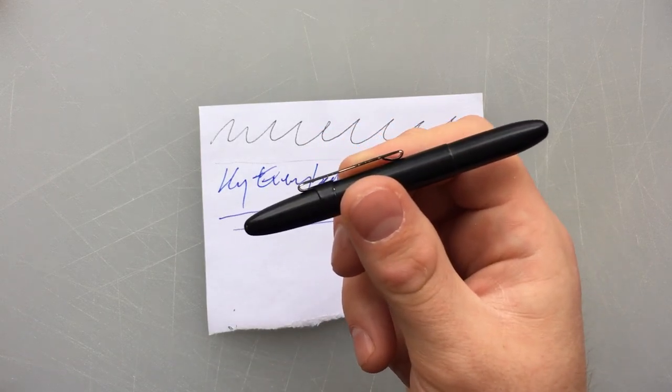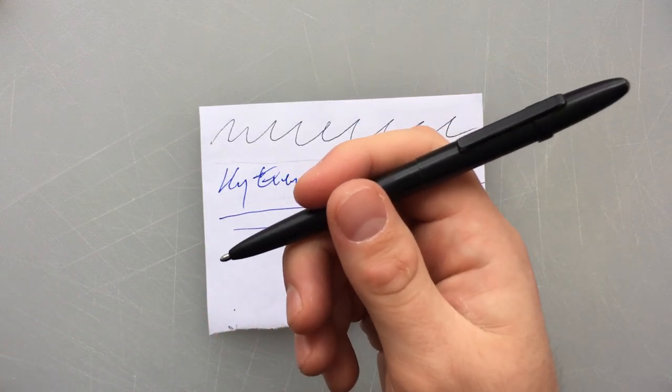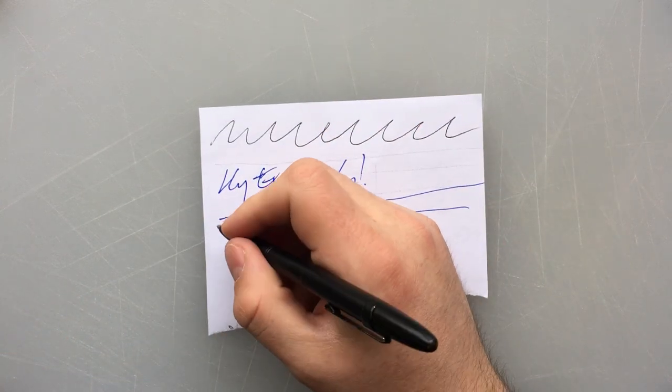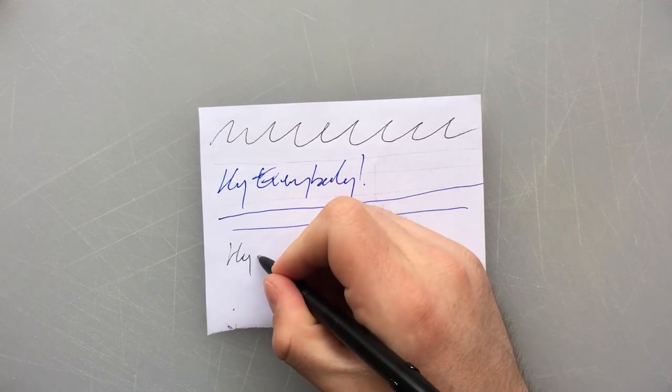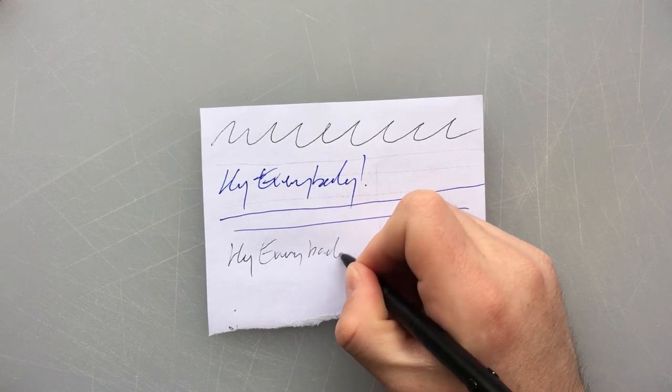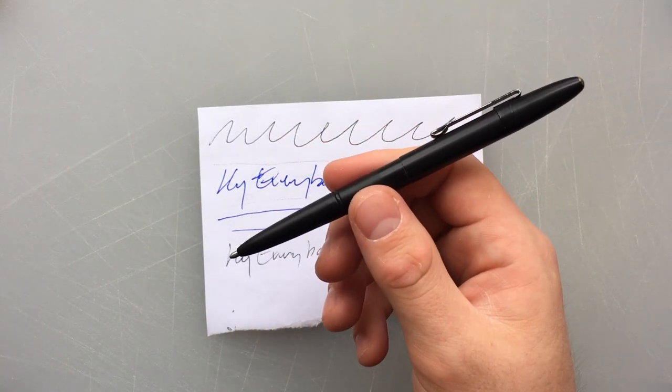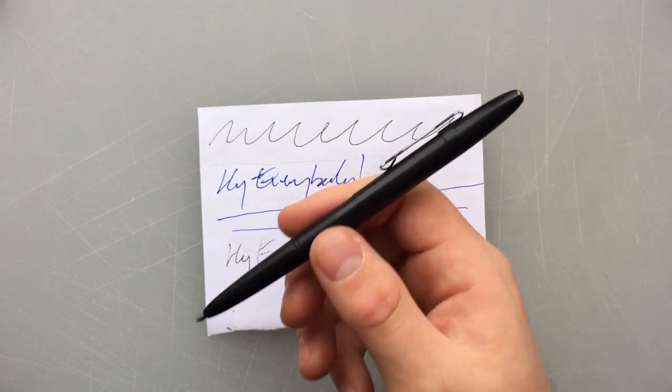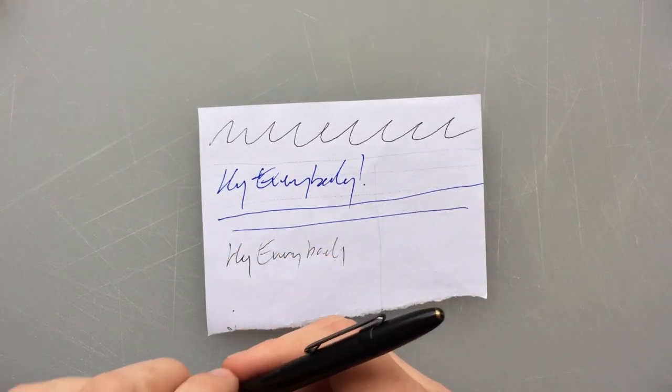The space pen fundamentally trades the ability to write really nicely for the ability to write everywhere. You know that no matter what the hell's going on, if you put the space pen to paper and you press down, it will write. The problem is it won't write that well. And so this is not a pen that you carry if you know you're going to be doing a lot of writing. This is a pen that you carry just in case you need to write something down and you got problems.